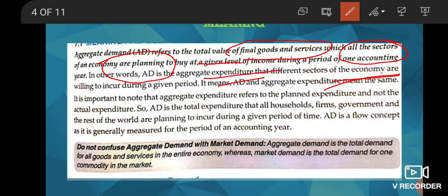Aggregate expenditure refers to the planned expenditure and not the actual expenditure. Aggregate demand is the total expenditure that all the firms, households, government and the rest of the world are planning to do during a given period of time. It is a flow concept and is generally measured in one accounting year.